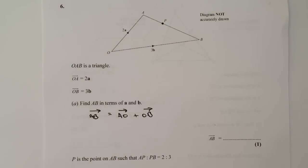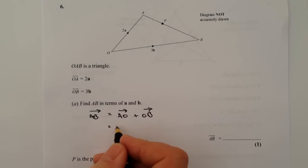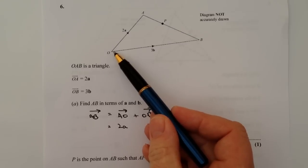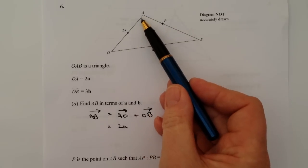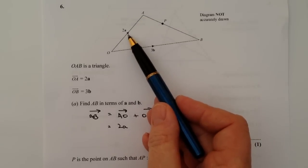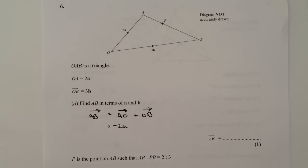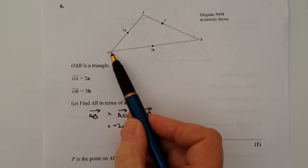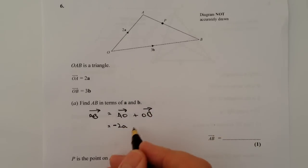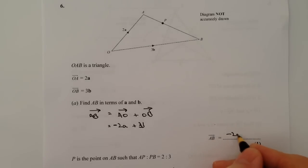OK, which we do know the information to. And what we do know is that vector AO is equal to 2a. But we're actually going along in this direction, so it's against this. So it's going to be minus 2a. OK, and then we're going to go from here to here. Well, that's going to be plus 3b. So vector AB is going to be equal to minus 2a plus 3b.